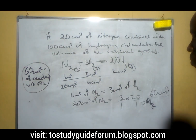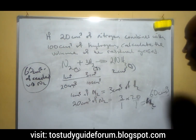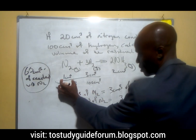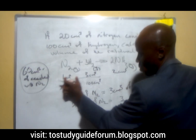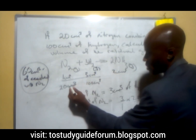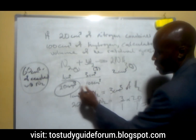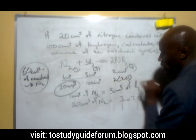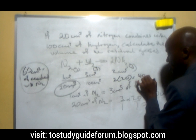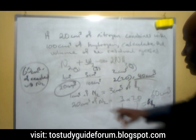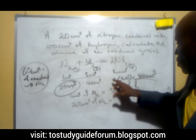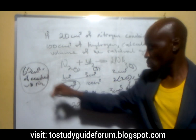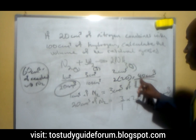Now we look for the volume of the product. From the simple ratio, 1 cm³ of nitrogen gives 2 cm³ of ammonia. That means 20 cm³ of nitrogen multiplied by 2 gives us 40 cm³ of ammonia. So at the end, the 20 cm³ of nitrogen will combine with 60 cm³ of hydrogen to give us 40 cm³ of ammonia, and we'll have something in excess.